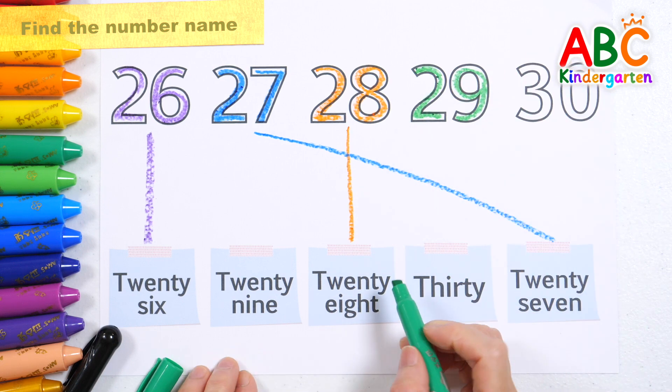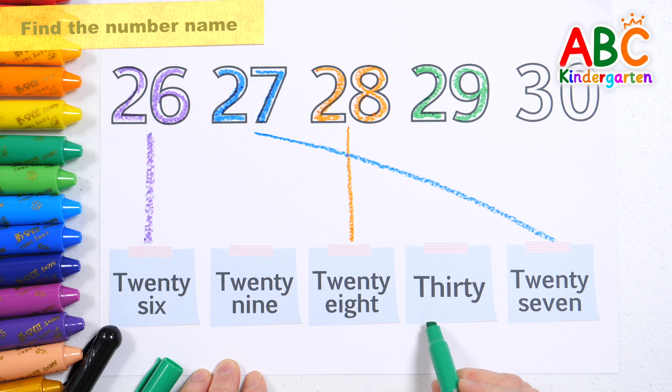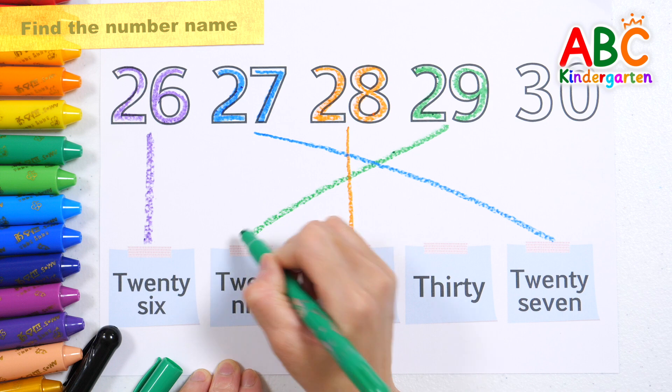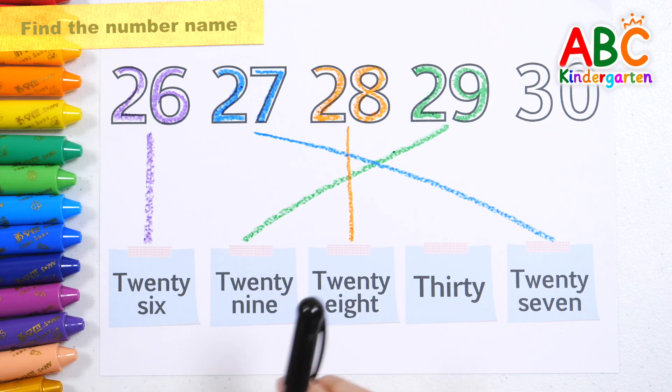29. That's right. 29. This old man came rolling home.